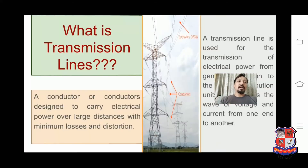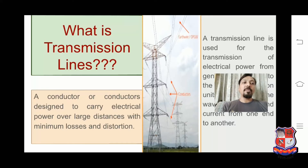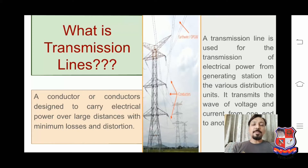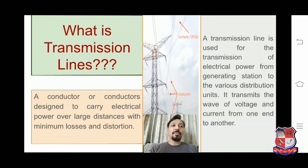Before discussing the types of transmission line, we have to discuss what is the transmission line. A conductor or conductors designed to carry electrical power over a large distance with minimum losses and distortion is known as a transmission line. Transmission line is used for the transmission of electrical power from the generating station to the distribution units.